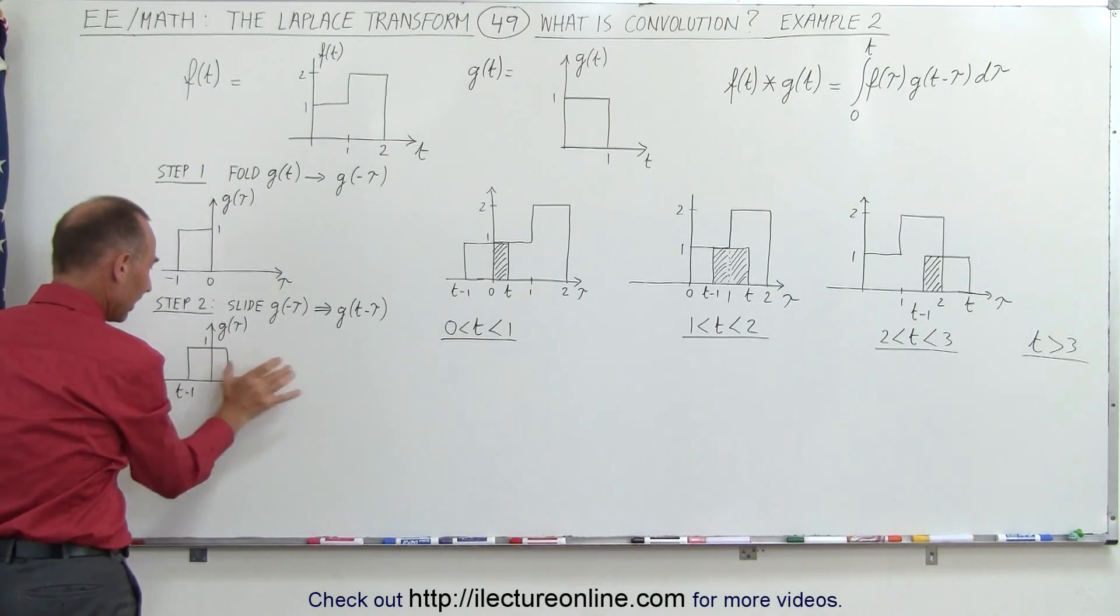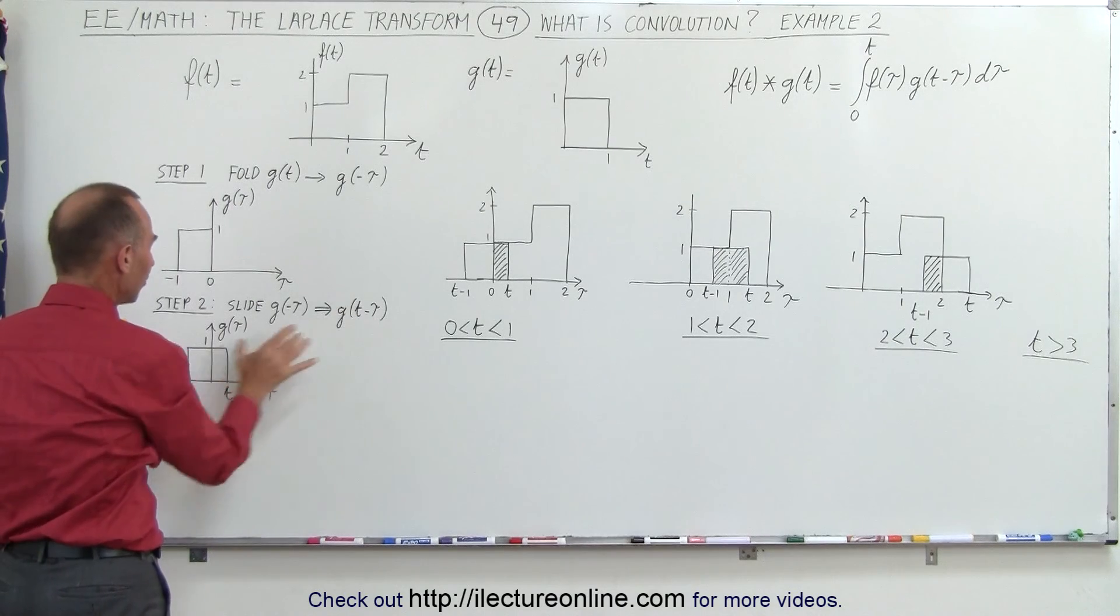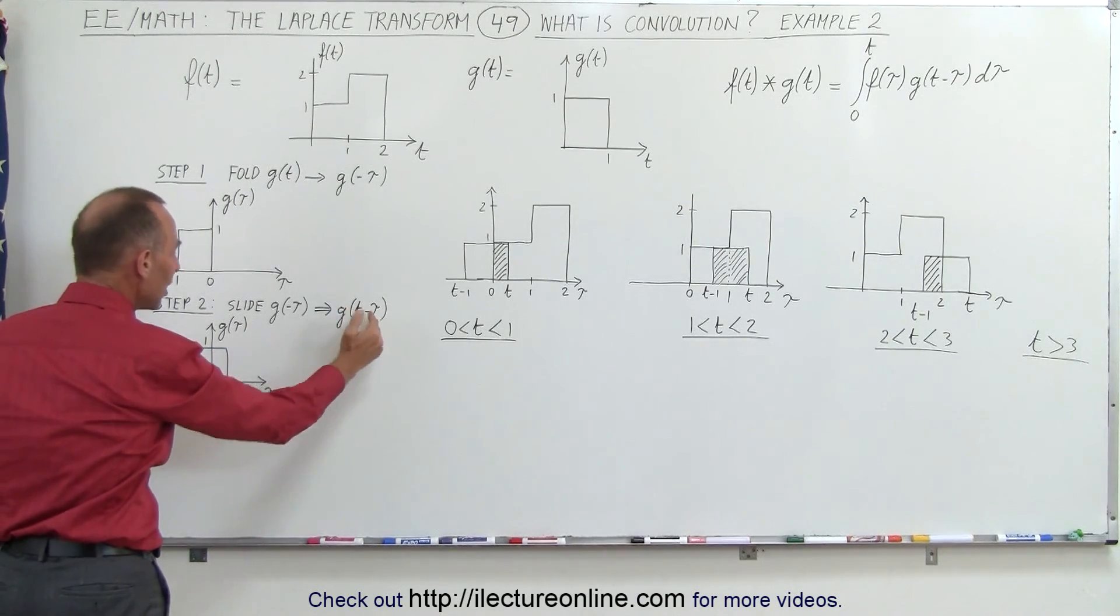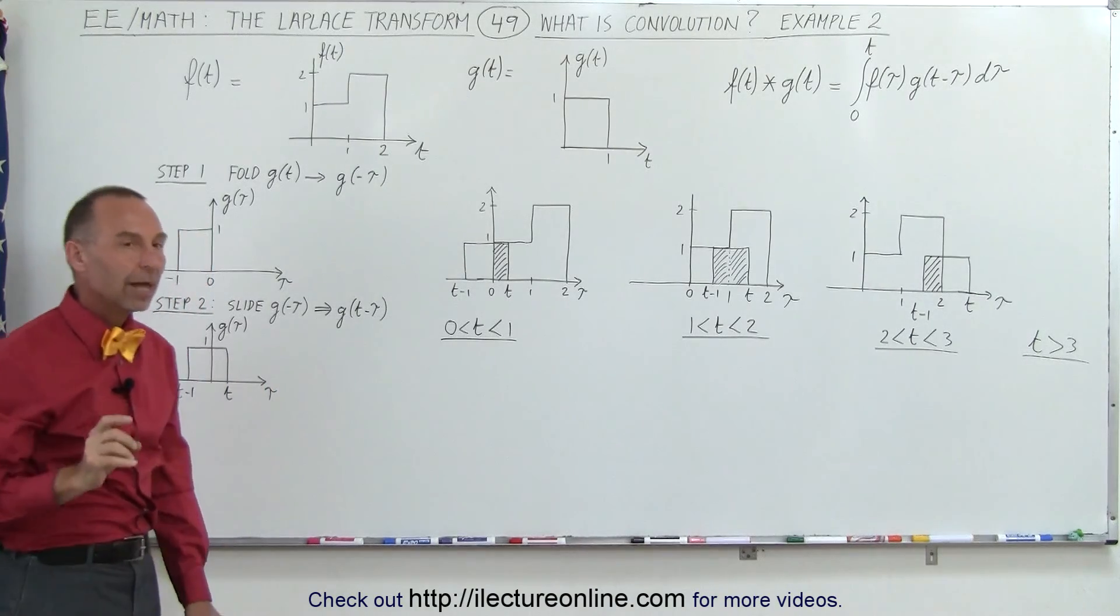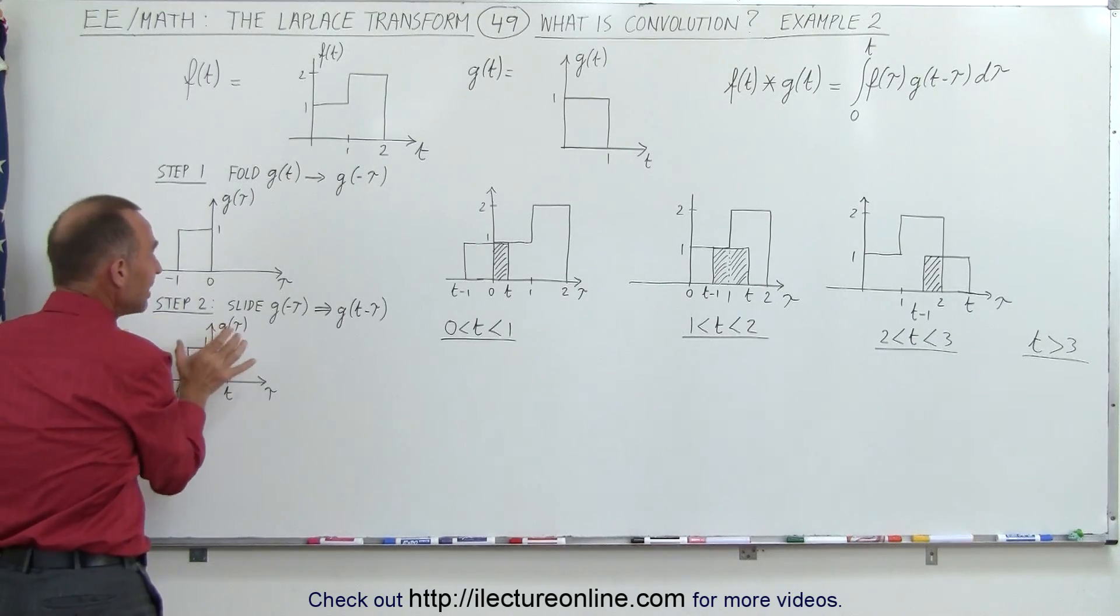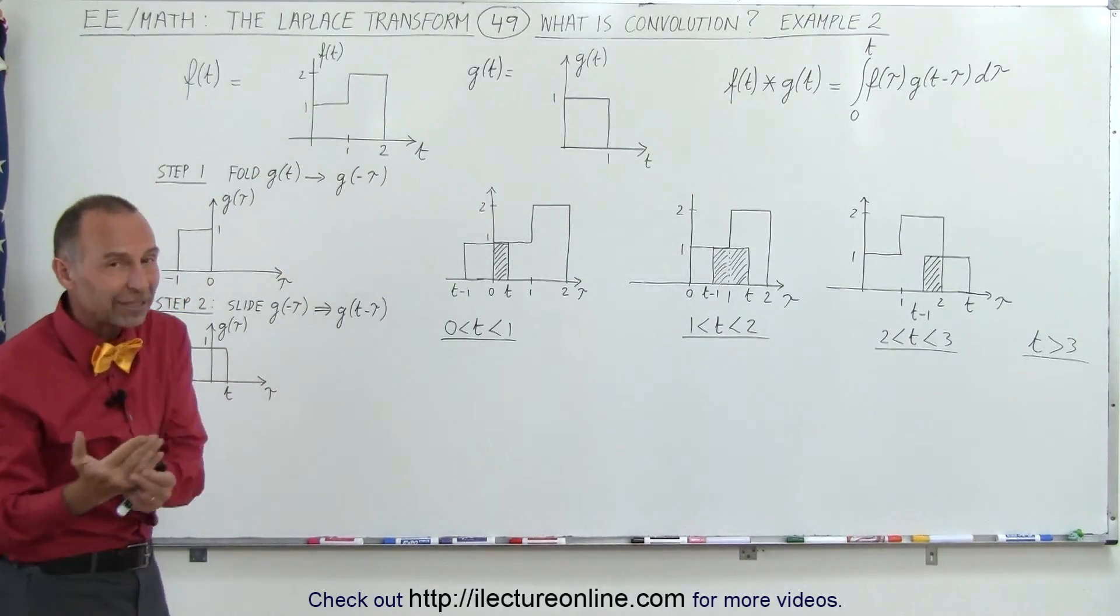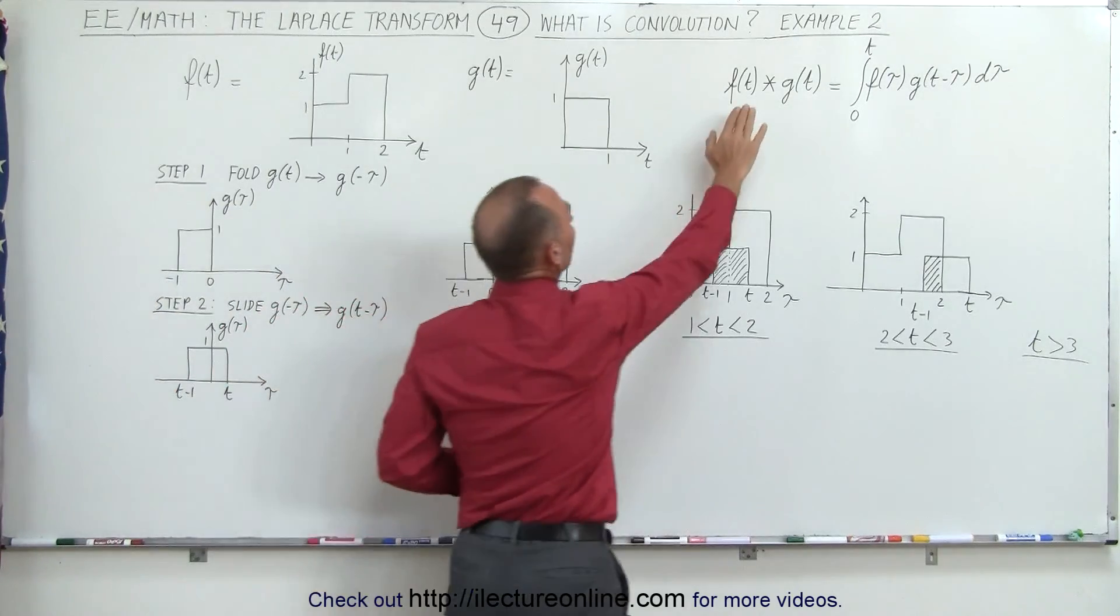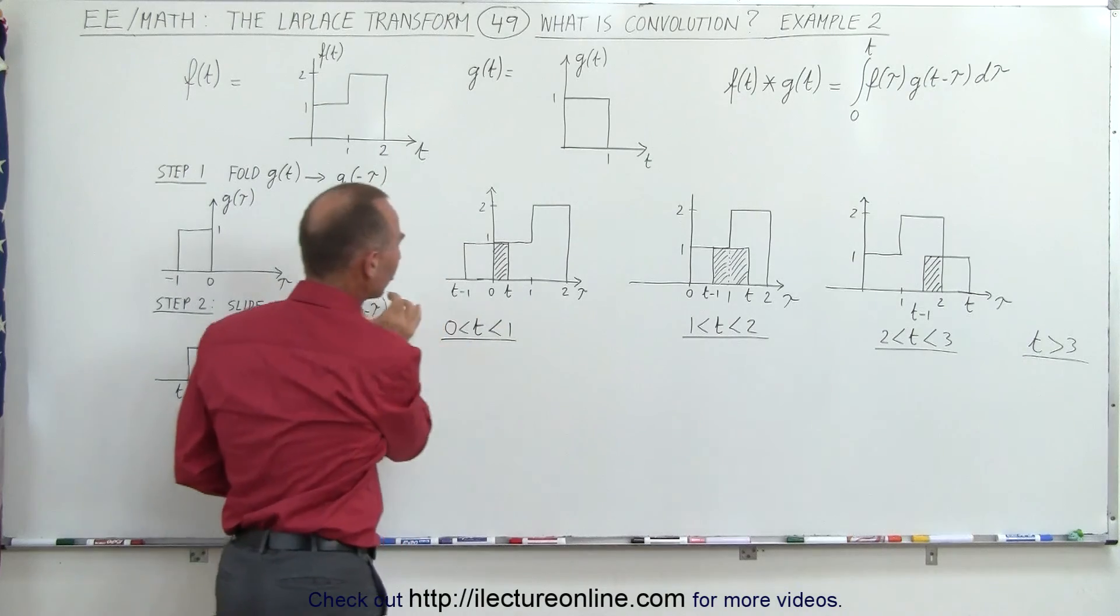Then we begin to slide g of tau, and so we now write as g of t minus tau, which means that as t changes, it begins to slide like this. Notice, now what we're going to do is we're going to slide g of t, or in this case g of t minus tau, across f of t, and that's graphically the definition of the convolution of f of t and g of t.